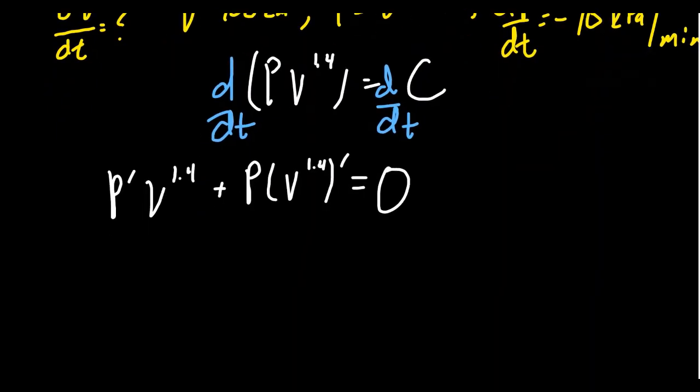Next, we need to finish calculating the derivative of volume to the 1.4. Be aware that we are taking the derivative with respect to time, not with respect to volume. So the chain rule comes into play here. The derivative will look like 1.4 times V to the 0.4 power. That's the outer derivative. We're going to lower the power by 1 there. And then we times that by the inner derivative of V prime.